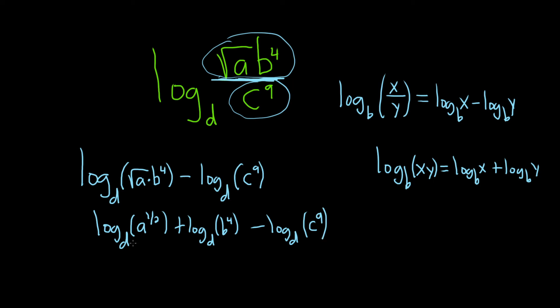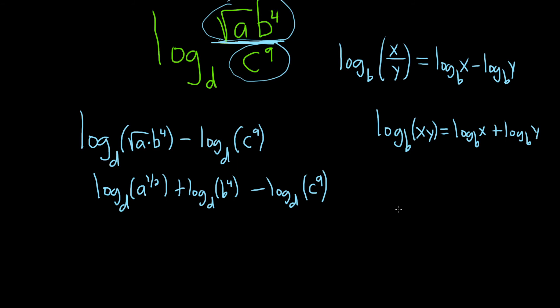The reason I wrote the square root of a as a to the 1/2 is because in the next step, we're going to use something called the power rule. The power rule basically says that whenever you have an exponent like this, you can just put it in the front. So this will be the last step.